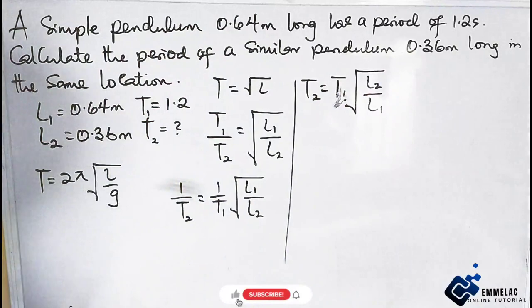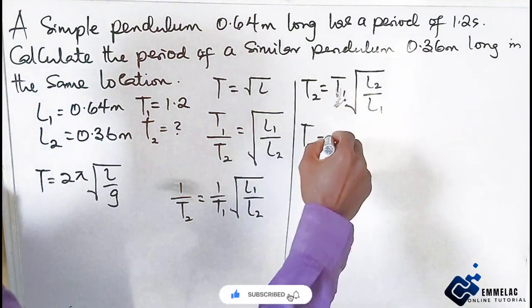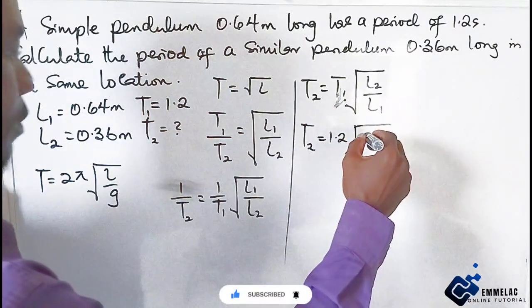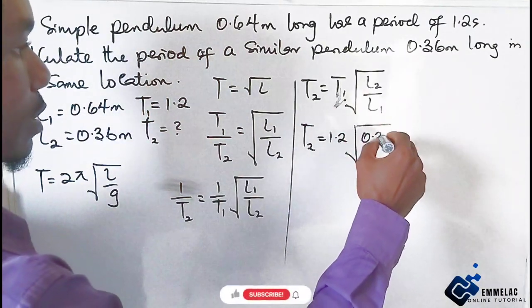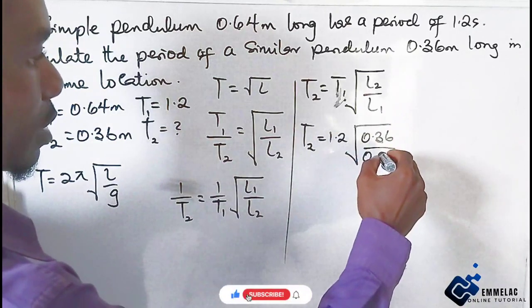With this now, we can plug in the parameters. T2 is what we're looking for. T1 is 1.2 and the square root of L2, 0.36 over 0.64.